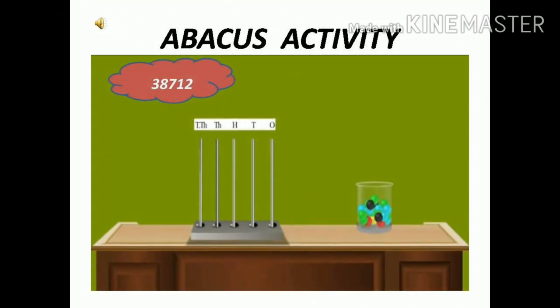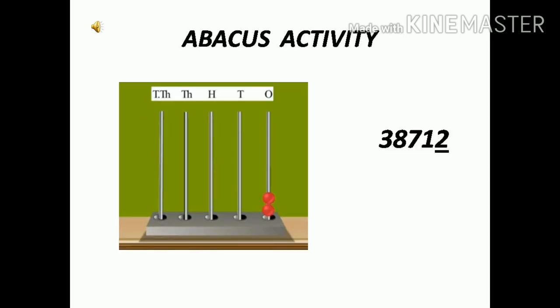Representing 5-digit numbers using an abacus. Here, we will represent 38,712. For this, we need a 5-spiked abacus and few beads. Read the digit at 1's place — that is 2. Now, put 2 red beads on the spike at 1's place.